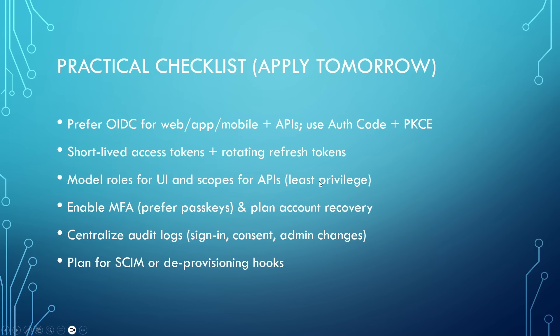Here is your quick start: choose OIDC for apps and APIs and use authorization code with PKCE. Make access tokens short-lived and rotate refresh tokens. Model roles for UI and coarse access; use scopes for API permissions. Enable MFA — prefer passkeys — and have an account recovery plan. Centralize audit logs for sign-in, consent, and admin changes. Plan SCIM provisioning, or at least reliable deprovisioning hooks.